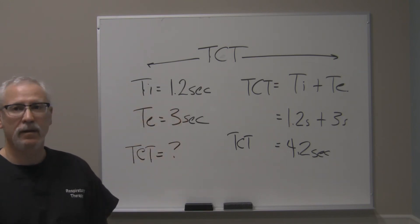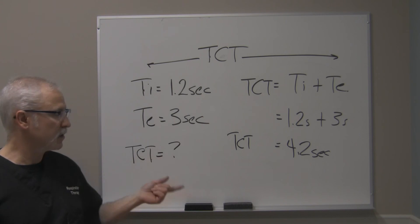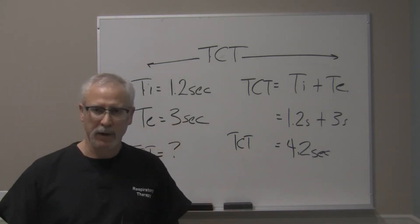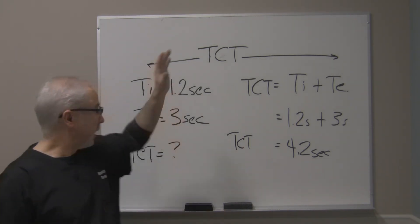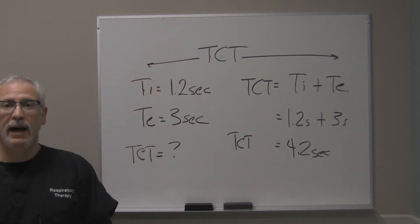You're going to find that your total cycle time is not always going to be an even number. It could be an odd number. It could also be a decimal or a number with a decimal place. So that's how you calculate out the values with TI and TE and total cycle time.